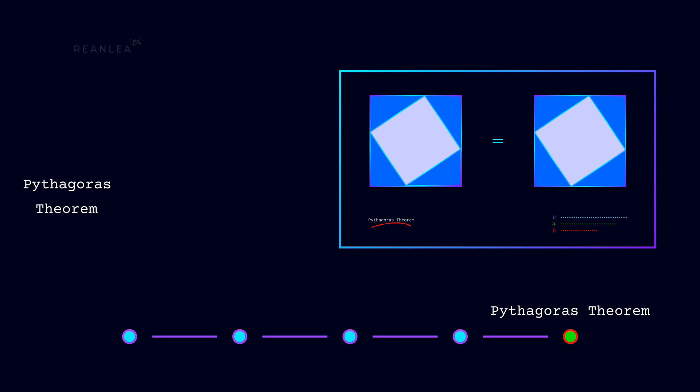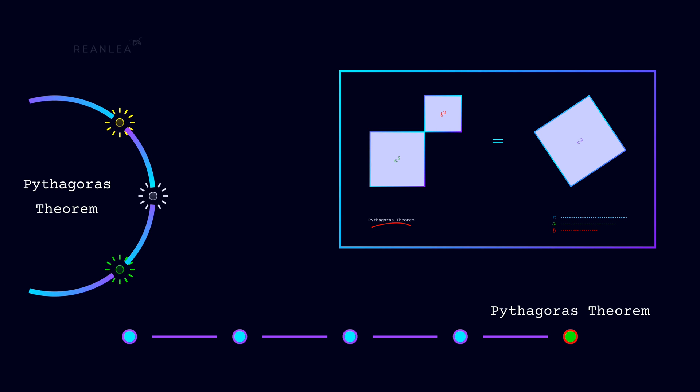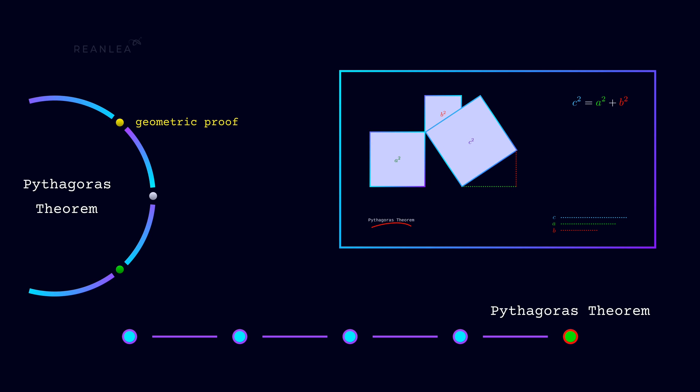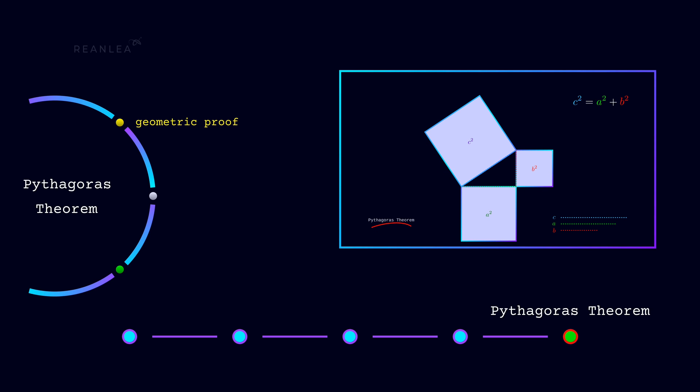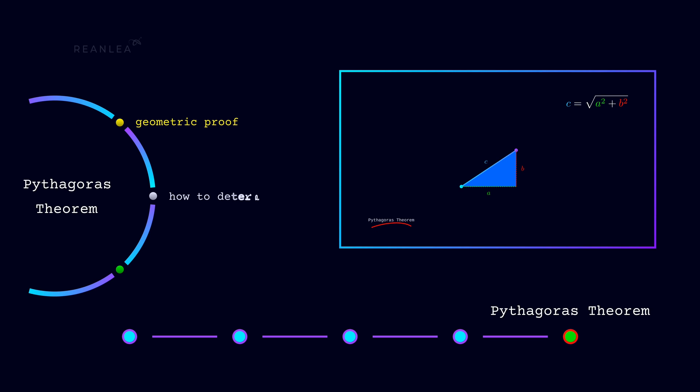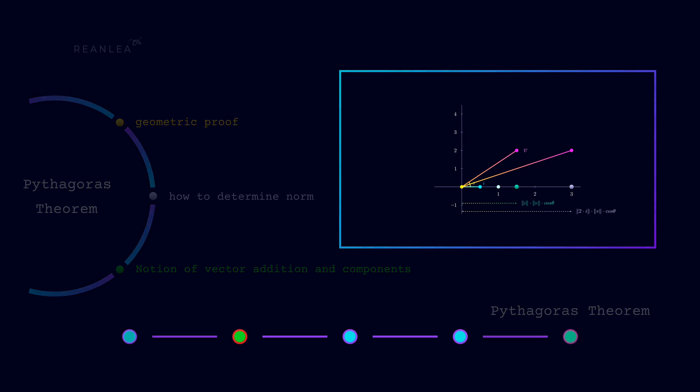Where first of all we'll prove the Pythagorean theorem with geometric and visual approach, literally by using a scale only. Then we'll determine the normal length of a vector, and on top of that we'll have an insight on the notion of vector addition and components.